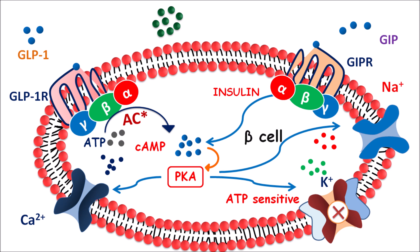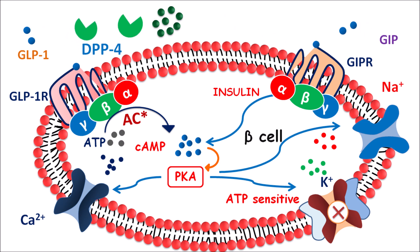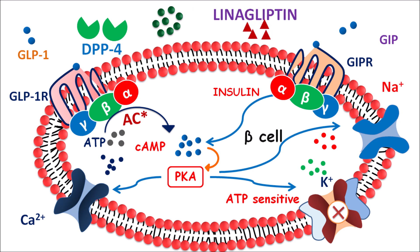In this way, incretins can increase the release of insulin from the beta cells, and they can also reduce the secretion of glucagon from alpha cells. But the action of these incretins — GLP1 and GIP — is controlled by the metabolic enzyme DPP4, dipeptidyl peptidase 4. This enzyme is responsible for cleavage of incretins so that their activity is reduced. Now linagliptin can selectively bind to the DPP4 enzyme, thereby inhibiting the activity of this enzyme.